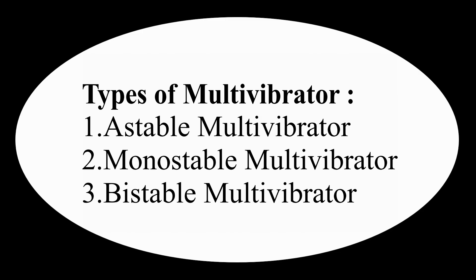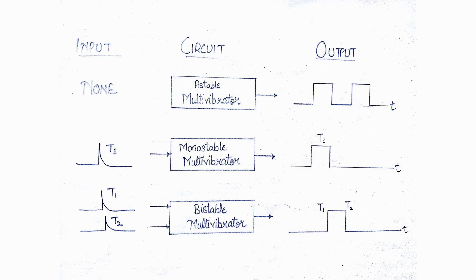There are various types of multivibrators. There are two possible states of multivibrator. In the first stage, transistor Q1 turns ON while transistor Q2 turns OFF. In the second stage, transistor Q1 turns OFF while transistor Q2 turns ON. These two states are interchanged for certain time periods depending upon the circuit condition. Depending upon the manner in which these two states are interchanged, the multivibrators are classified into three types.